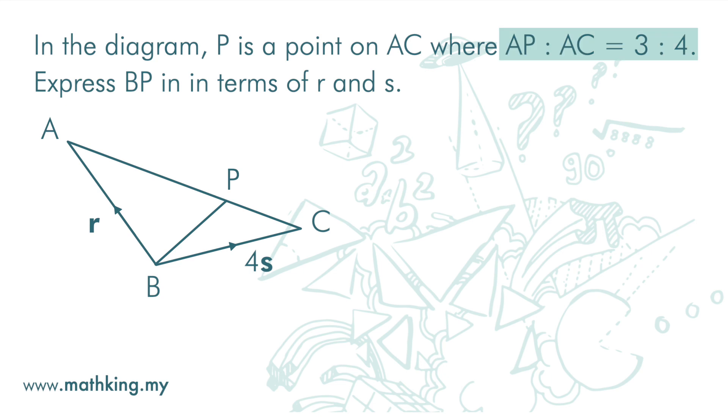Right, we are given AP to AC is 3 to 4. So, AP is 3 and PC is 1, so that AP to AC is 3 to 4.